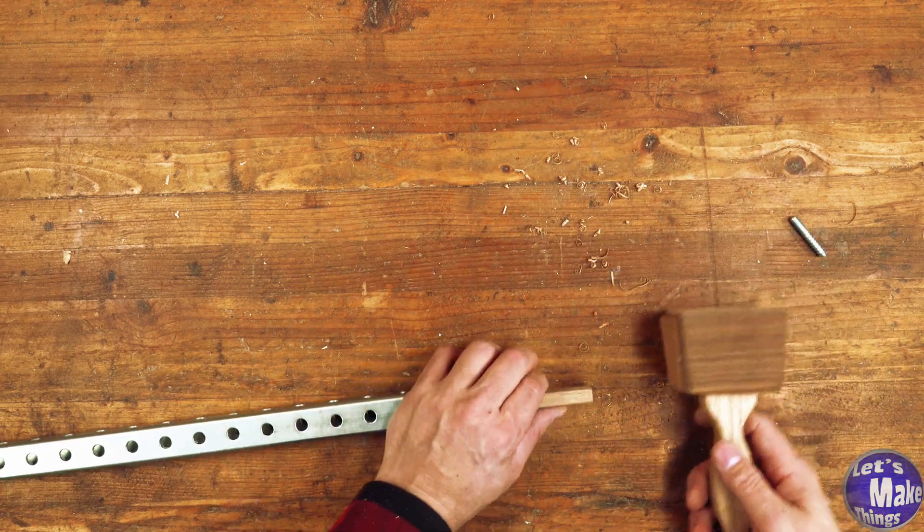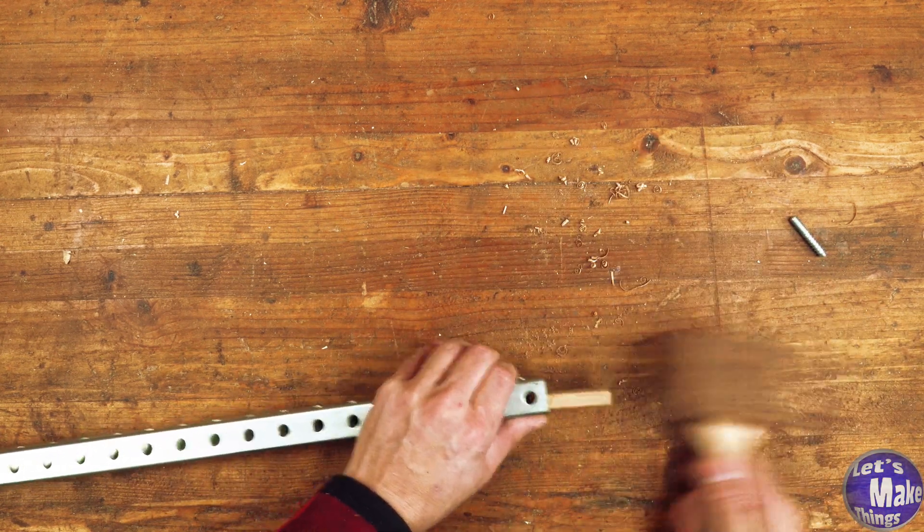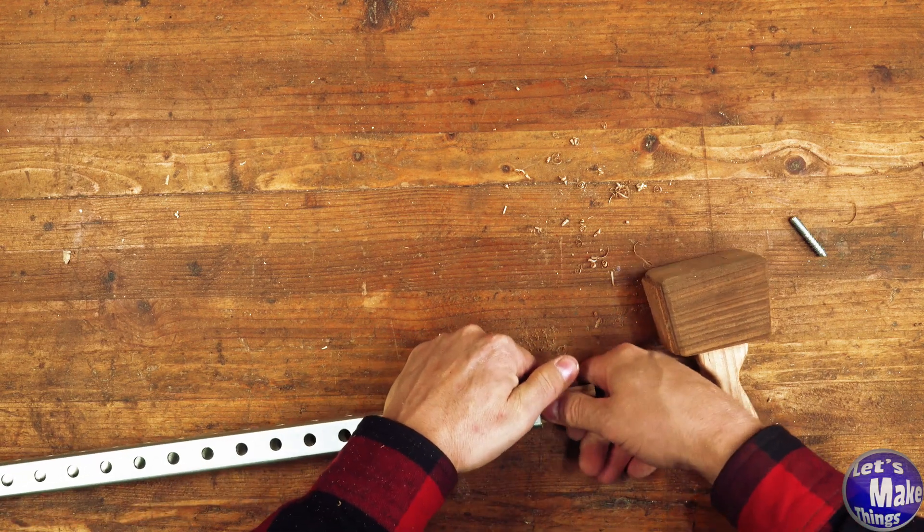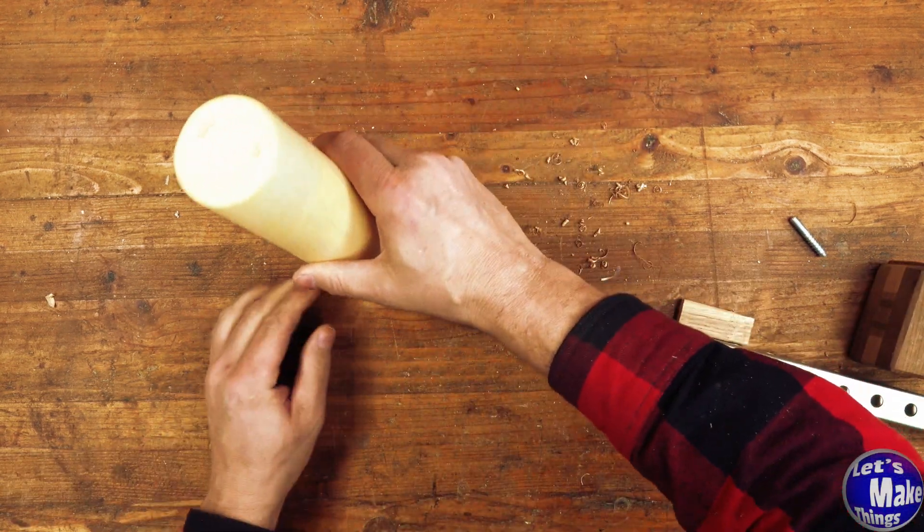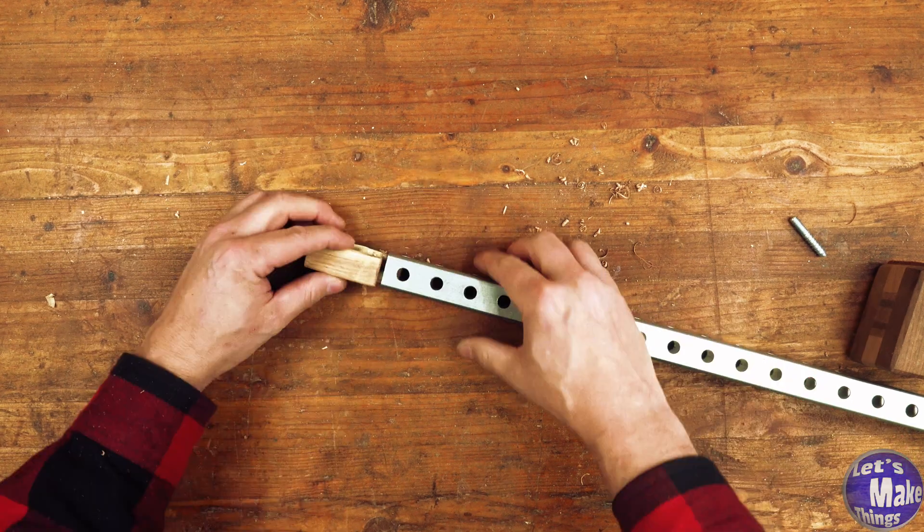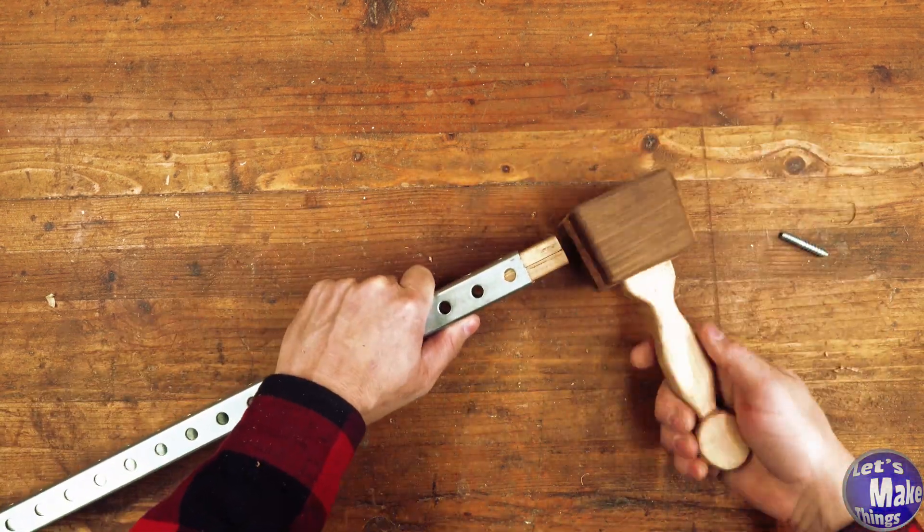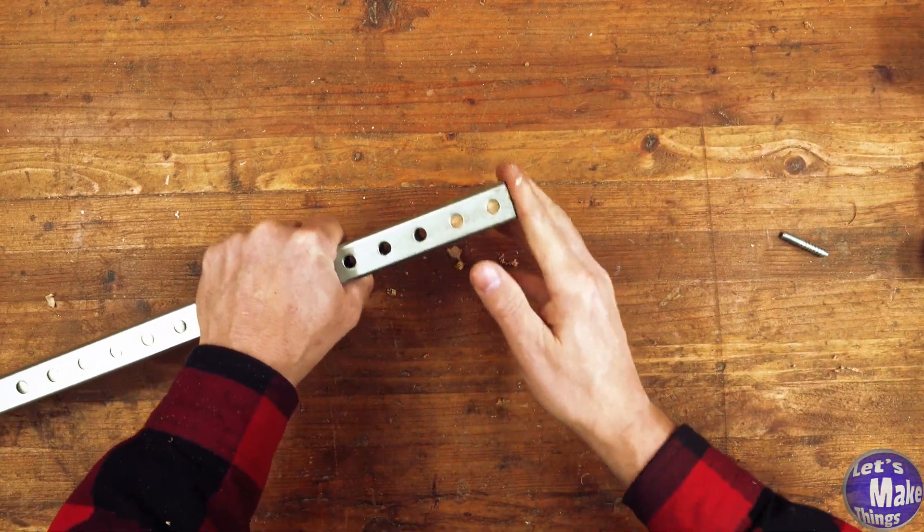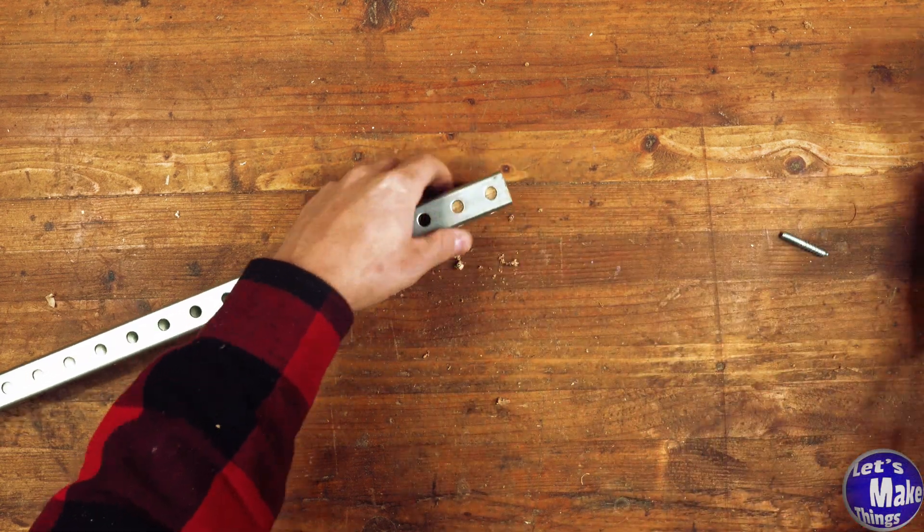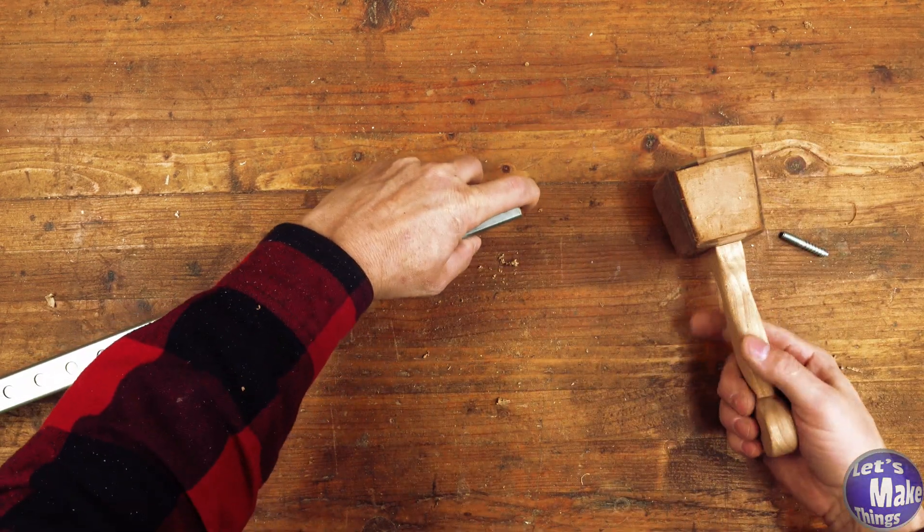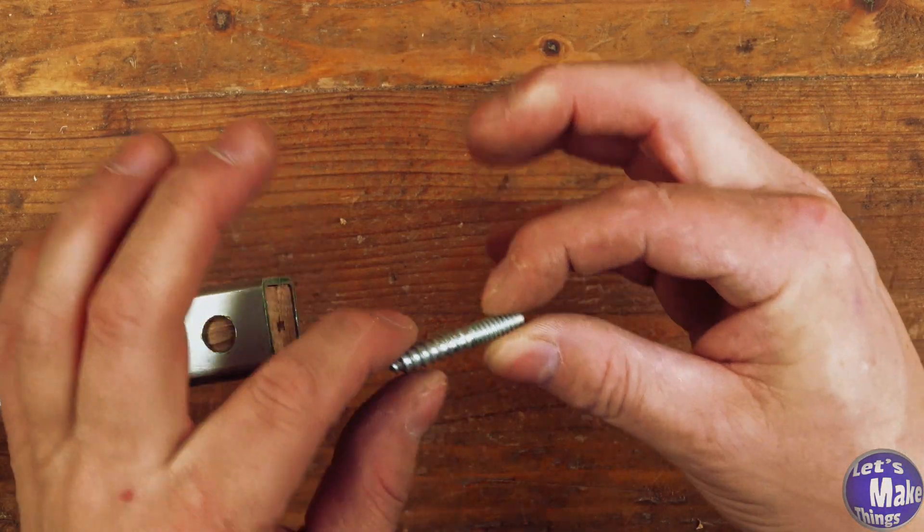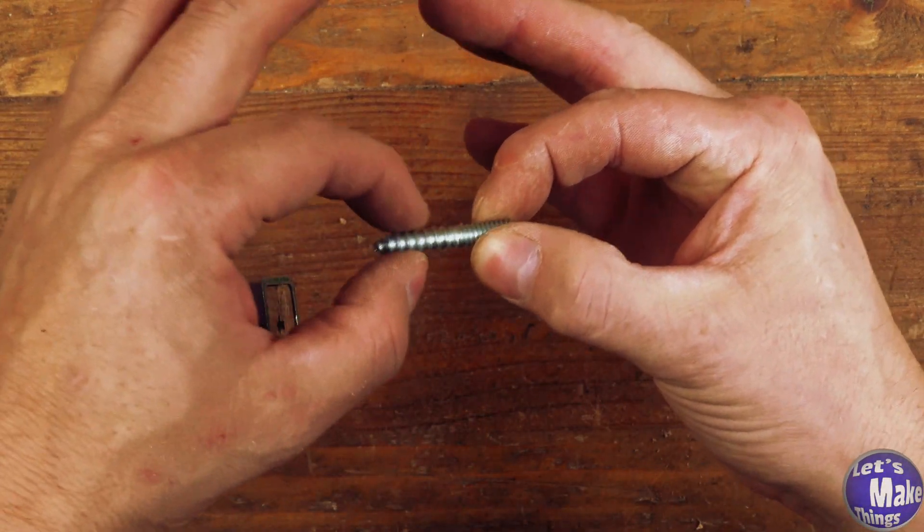I had a subscriber send me this in the mail - thank you very much. I'm not sure if she wants me to let everyone know her name. I'm going to use a little bit of wood glue - you could probably get away with pressing them in there real tight. I want to make sure we get that flush with the surface, or even right below the surface is probably even better.